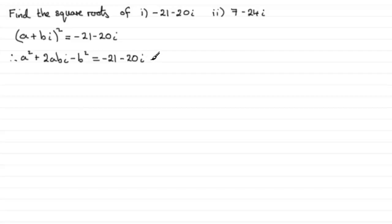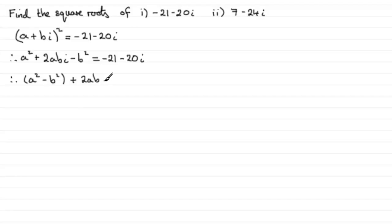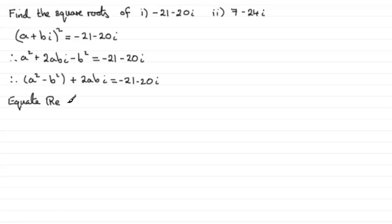I'm going to group up the real and imaginary parts together. The real parts give us a squared minus b squared, and then the imaginary part is plus 2ab times i, and that equals minus 21 minus 20i. Equating the real parts, we get a squared minus b squared equals minus 21. Call that equation 1.